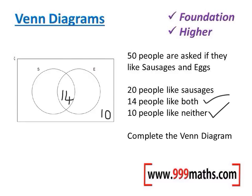Now we've got two sections left to fill in. Because 20 people like sausages, and if you go back to what we said a minute ago, that means that this circle has to add up to 20. Because 14 people like both, 20 take away 14 gives me 6 for here.